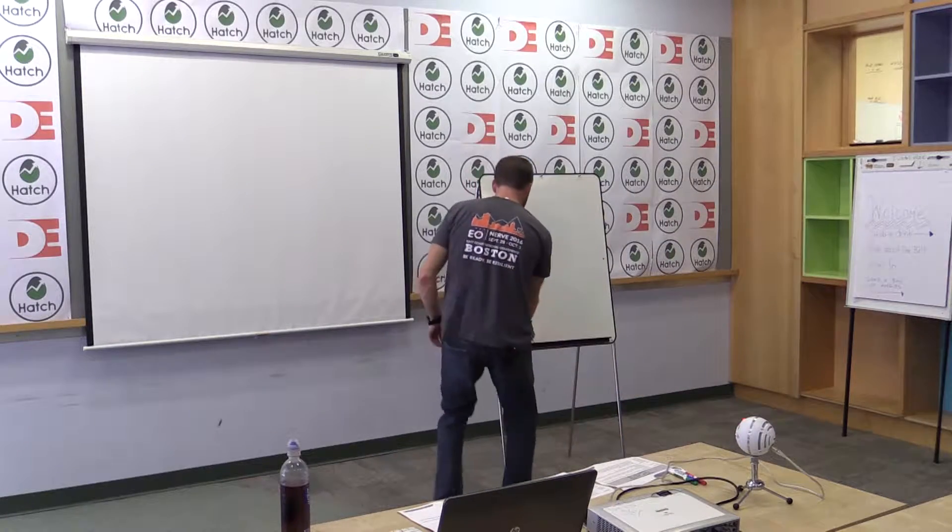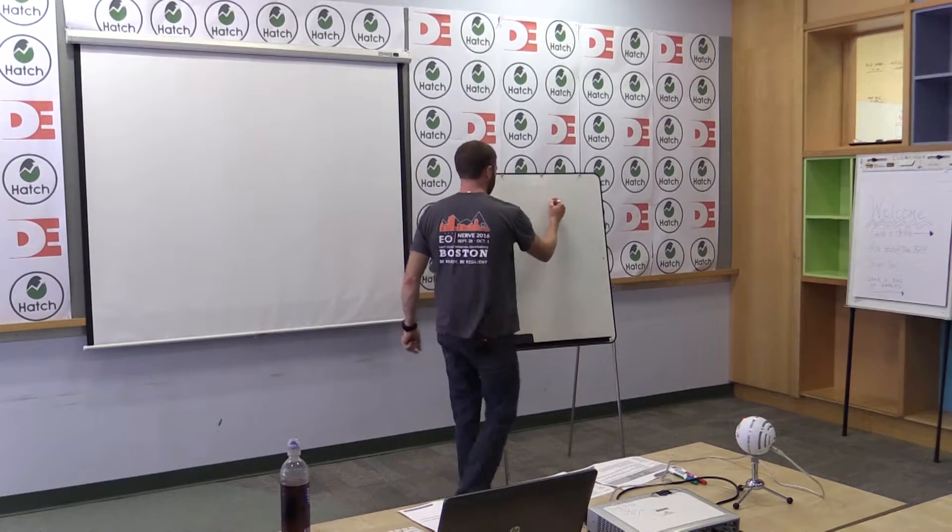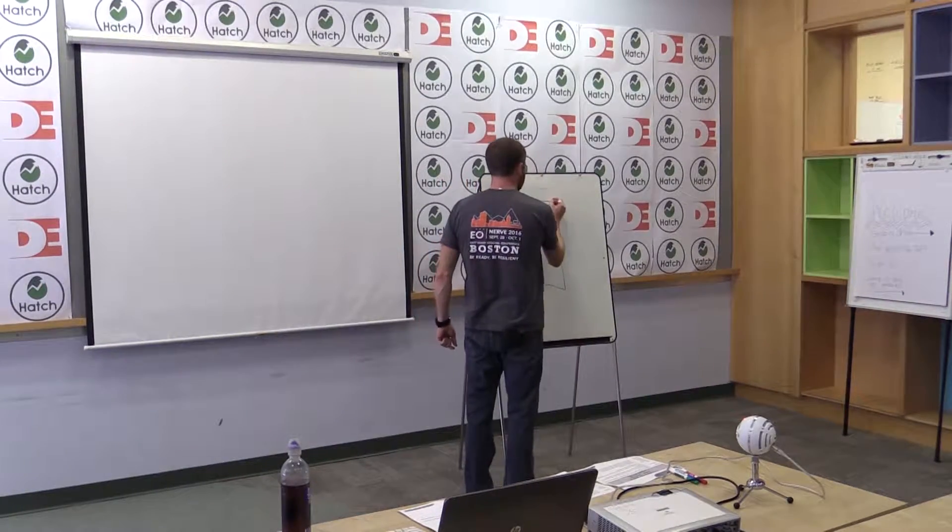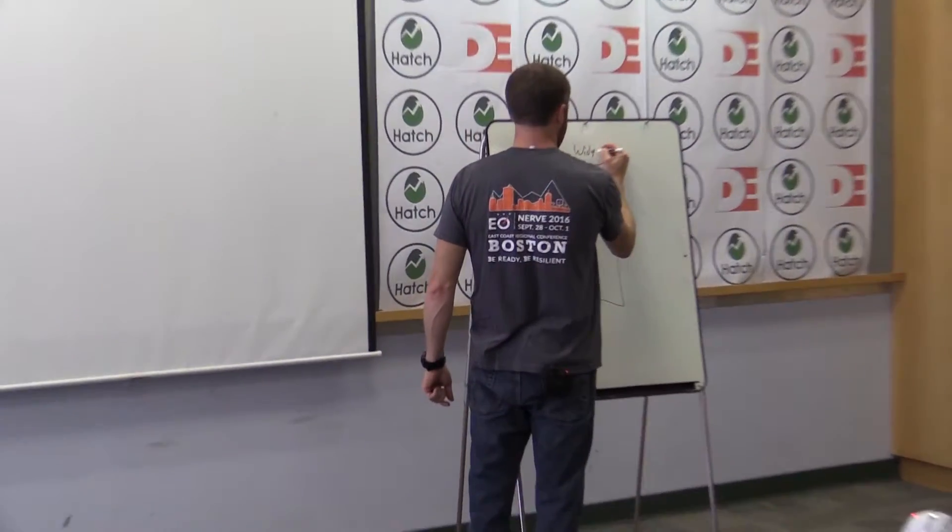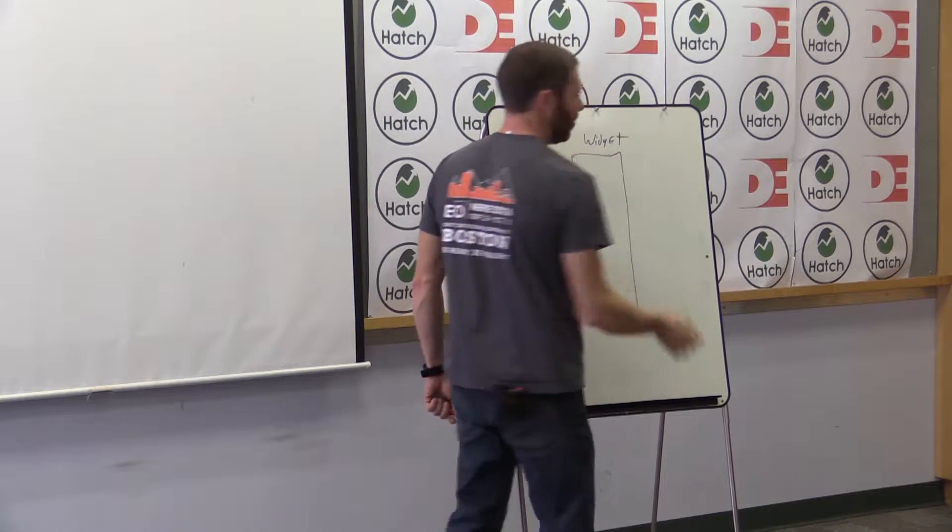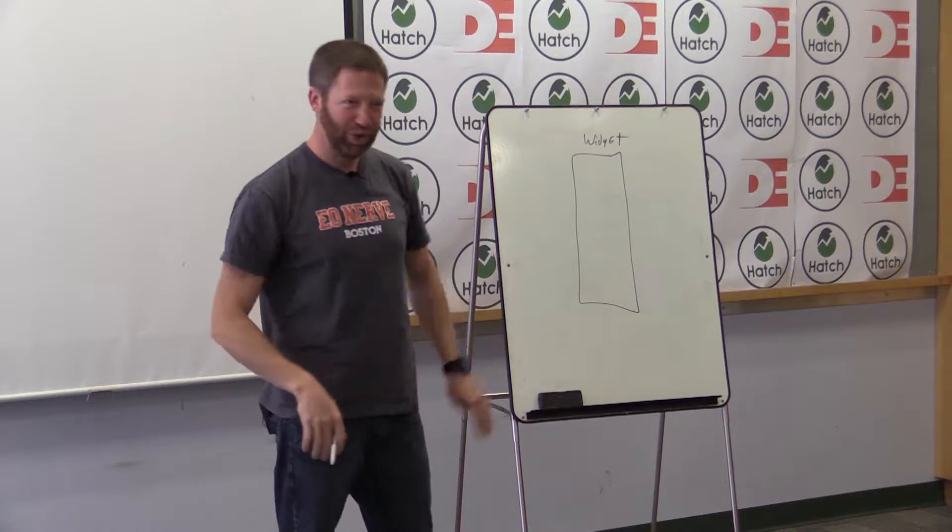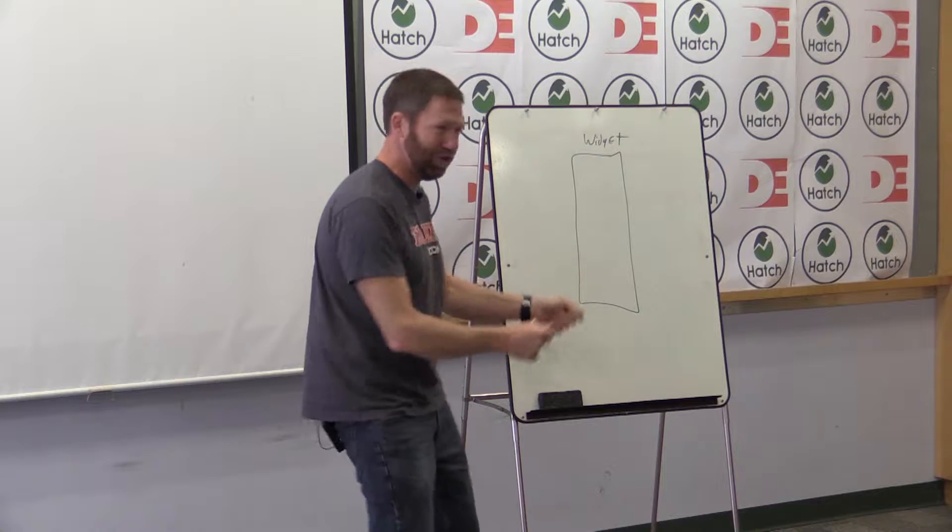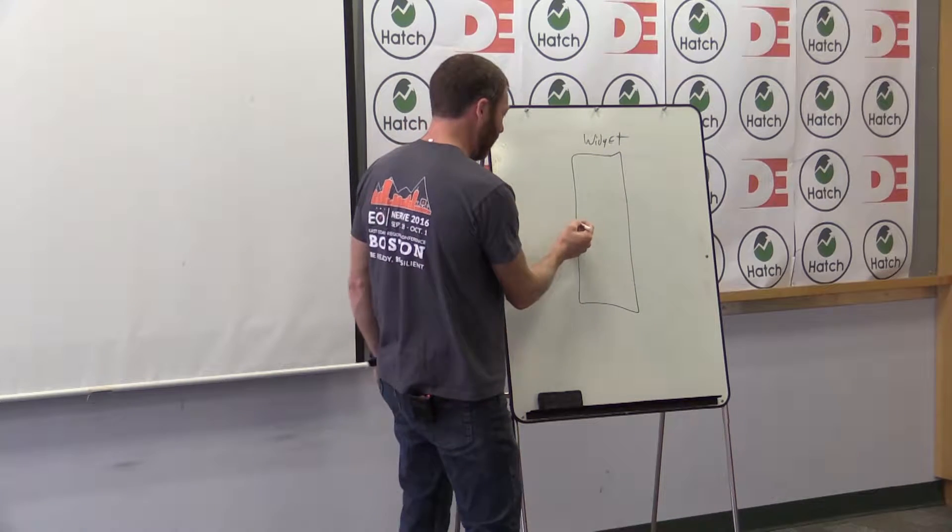There's a guy named Alan Miltz that taught me the importance of this. It's called Growing Broke, but let's say you got your widget. Whatever the widget is, it doesn't matter if it's software as a service. You have labor and if it's actually a widget, you have raw materials, but whatever.